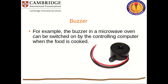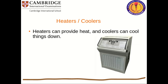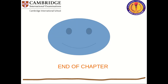Light bulbs and LEDs can be used to provide light or indicate something. For example, when driving a car and the person in front brakes, the brake light blinks to indicate braking and prevent an accident. Indicators show turns and parking signals. Heaters provide heat and coolers cool things down — for example, a computer heats up during use and coolers are used to cool it down. This concludes our chapter on input and output devices. Hope you have enjoyed it. Thank you very much, see you again.